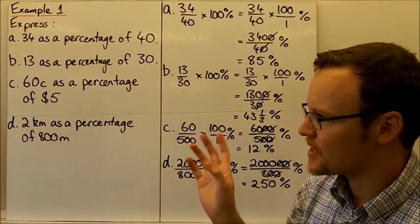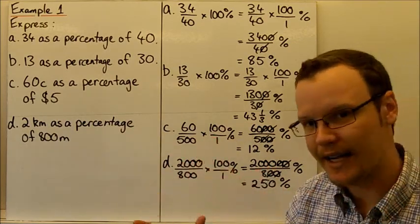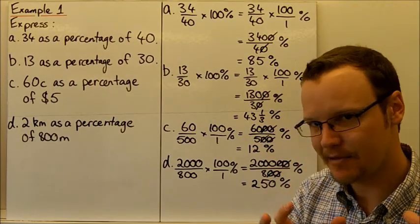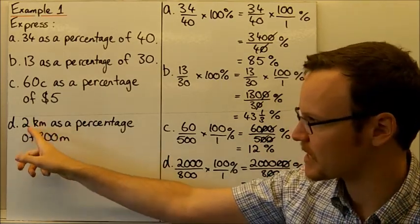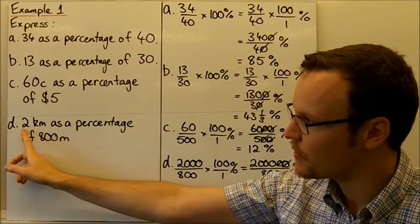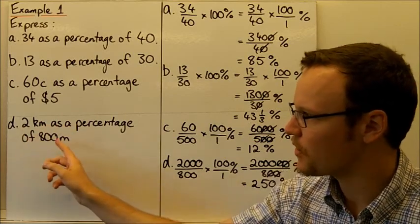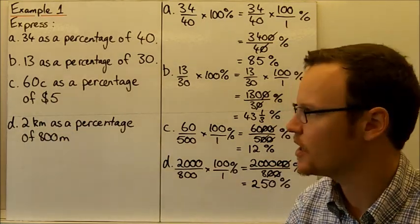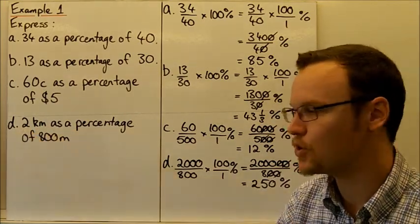So lastly, 2 kilometers as a percentage of 800 meters. So the part is 2 kilometers, even though it's bigger than 800 meters, it's still the part because we're expressing it as a percentage of the whole, 800 meters. So the part as a percentage of the whole. So 2 kilometers and 800 meters, once again, not in the same units. We can convert the 2 kilometers to meters.